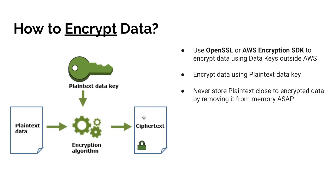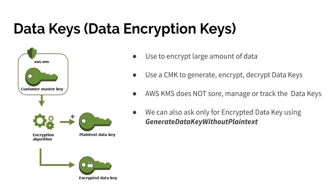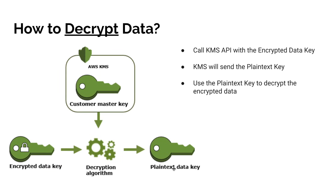Now the question is: how do you decrypt the ciphertext? The plain text data key has been deleted, so to decrypt you need it again. What you have is the encrypted version of that plain text data key. You take that encrypted data key, call the KMS API, and ask it to decrypt and return the plain text version. Since that encrypted data key was encrypted by the CMK inside KMS, KMS can decrypt it using the same CMK and return the plain text data key. You can then use that plain text data key to decrypt your ciphertext. This is how KMS works, and it is vital to understand this process. In the next video, I will go straight to the demos.